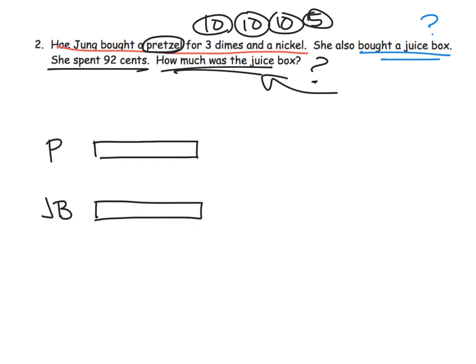It says Heizhong bought a pretzel for 35 cents. So this right here represents 35 cents. So I'm going to draw 35 cents right there. And then it says she also bought a juice box, but we're not told how much that juice box is. So I'm going to draw a question mark right there. It doesn't say if it's less than the pretzel or longer than the pretzel, so I'm just leaving it the same. It's perfectly fine. Now it does say she spent a total of 92 cents, so both of these combined equals 92 cents. So how much money was the juice box? That's why we have a question mark right here.